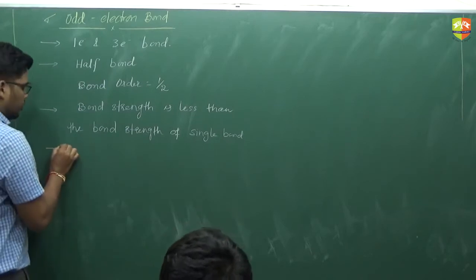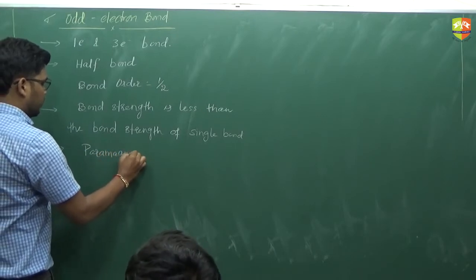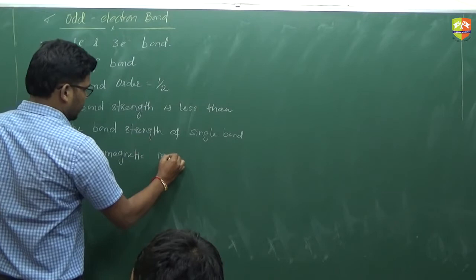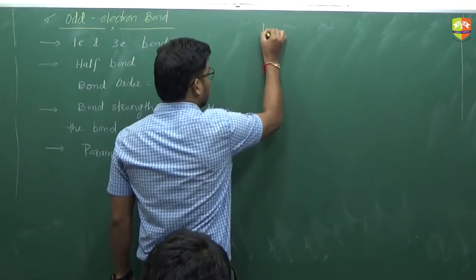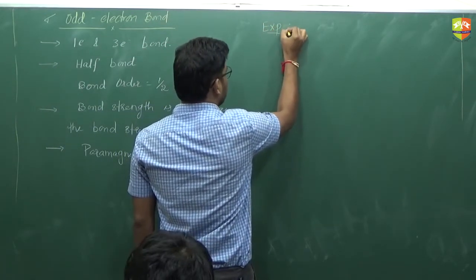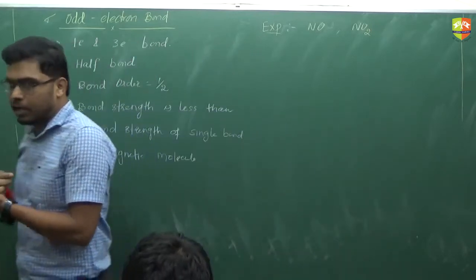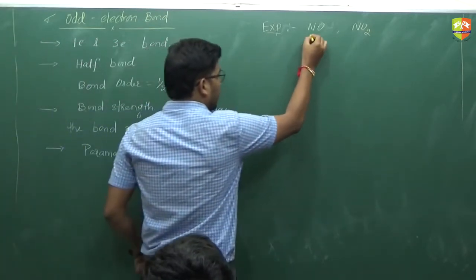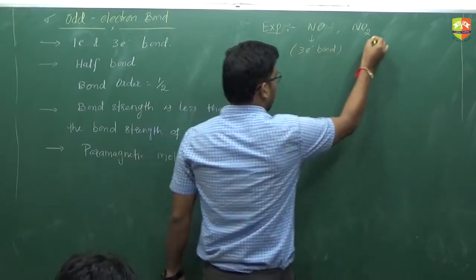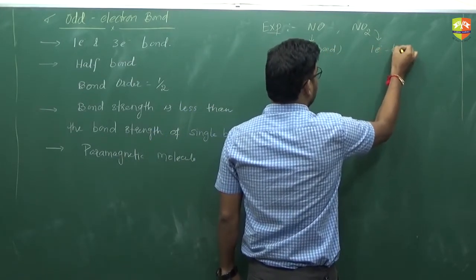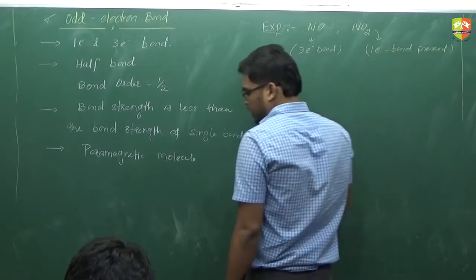The molecule in which an odd electron bond is present, we call it a paramagnetic molecule, because it has an odd number of electrons. There are only two examples we have to remember: NO and NO₂. NO has a three-electron bond, and NO₂ has a one-electron bond present.